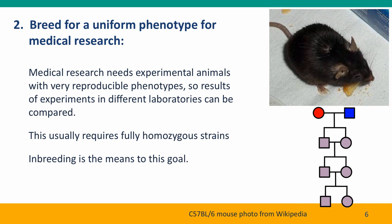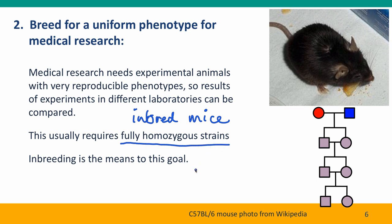The most extreme example of breeding for a uniform phenotype comes from biomedical research. This research needs experimental animals with very reproducible phenotypes because research progress depends on results in one lab being replicated by researchers in a different laboratory working independently. This requires experimental animals that are genetically uniform across laboratories and across time. To accomplish this, researchers have developed what are called inbred mice — not just inbred, but severely inbred to the point that they are fully homozygous at all loci, accomplished by severe inbreeding.